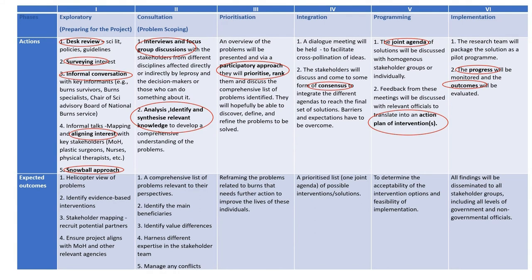The second phase is the consultation or problem scoping phase, where researchers carry out in-depth interviews and focus group discussions to develop a comprehensive list of problems relevant to the perspectives of different stakeholders. In the prioritization phase, stakeholders come together to prioritize and rank the problems, and reframe them — in this case, related to burns — that would need further action to improve the lives of these individuals.